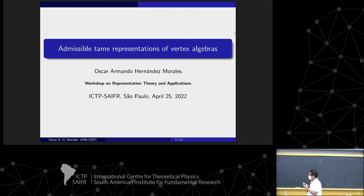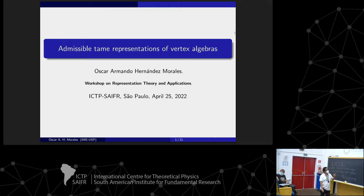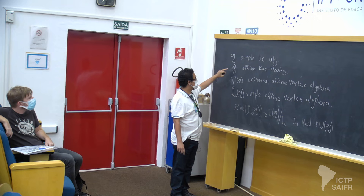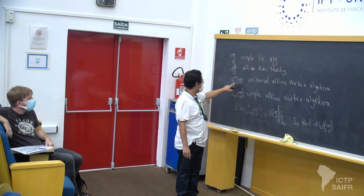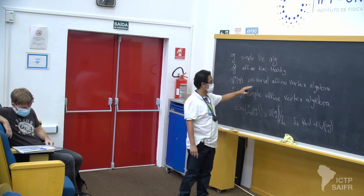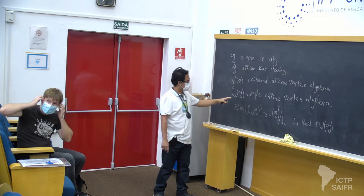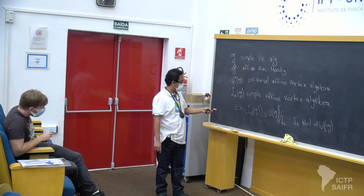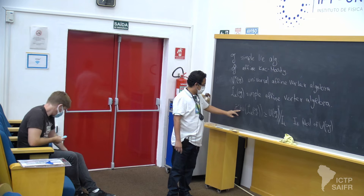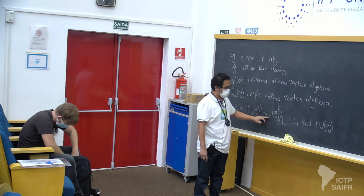We have two problems. The first is the representation of vertex algebras. Suppose a simple algebra — the vertex algebra is the universal vertex algebra. The simple quotient of this algebra is the simple vertex algebra, which is isomorphic to this other algebra.